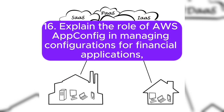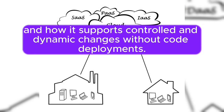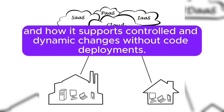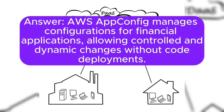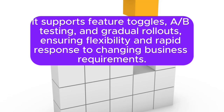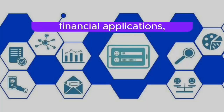Question 16: Explain the role of AWS AppConfig in managing configurations for financial applications, and how it supports controlled and dynamic changes without code deployments. Answer: AWS AppConfig manages configurations for financial applications, allowing controlled and dynamic changes without code deployments. It supports feature toggles, A/B testing, and gradual rollouts, ensuring flexibility and rapid response to changing business requirements.